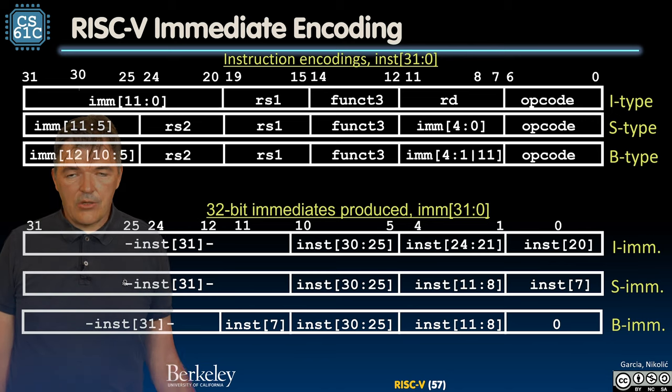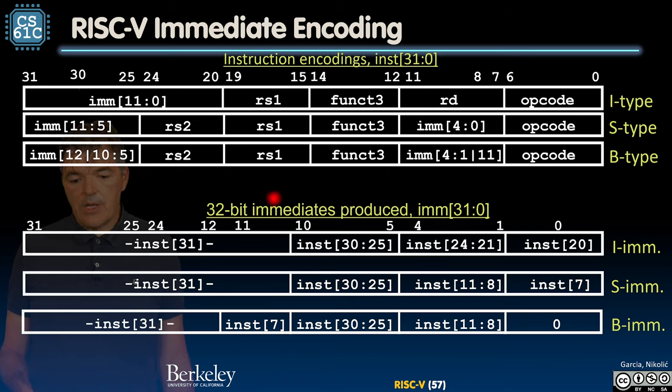So just to recap immediate encoding, we have seen three types of immediate so far: I type, S type and B type. They're very similar to each other. And when we produce the actual immediate that is 32 bits wide out of a 12 bit value that is encoded inside the instruction, we do that in a similar fashion. So we always sign extend the bottom parts. Between I immediate and S immediate they are different. So it's a two way multiplexer that we have seen before, and the B immediate shares the same idea.